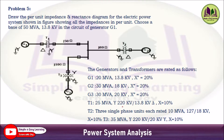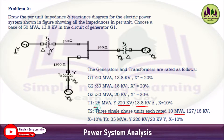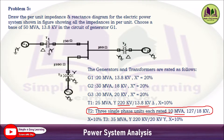Transformer T1: 25 MVA, star side 220 kV, delta side 13.8 kV, x = 10%. Transformer T2 comprises three single-phase transformers, each rated at 10 MVA, voltage rating 127/18 kV, and x = 10%. Note that T2 is not a single three-phase transformer, but three single-phase transformers grouped together.